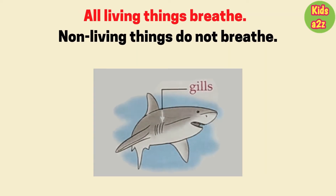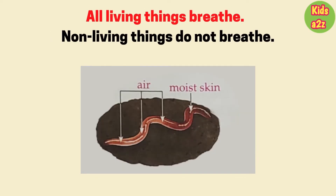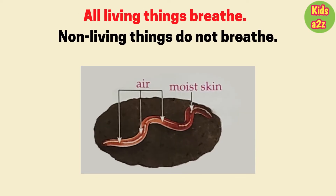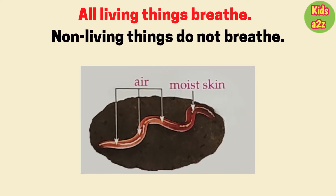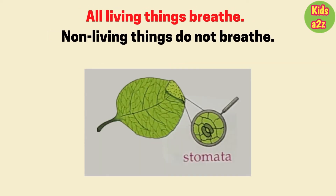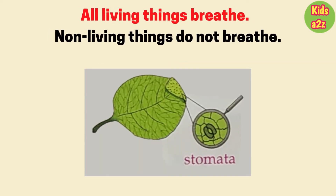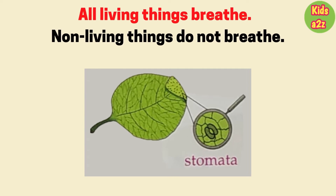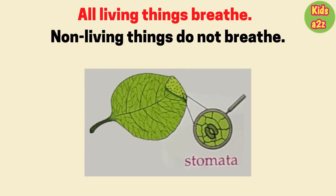Fish breathe through their gills. Earthworms breathe through their skin as long as it stays wet. Plants breathe through tiny holes called stomata present in their leaves.